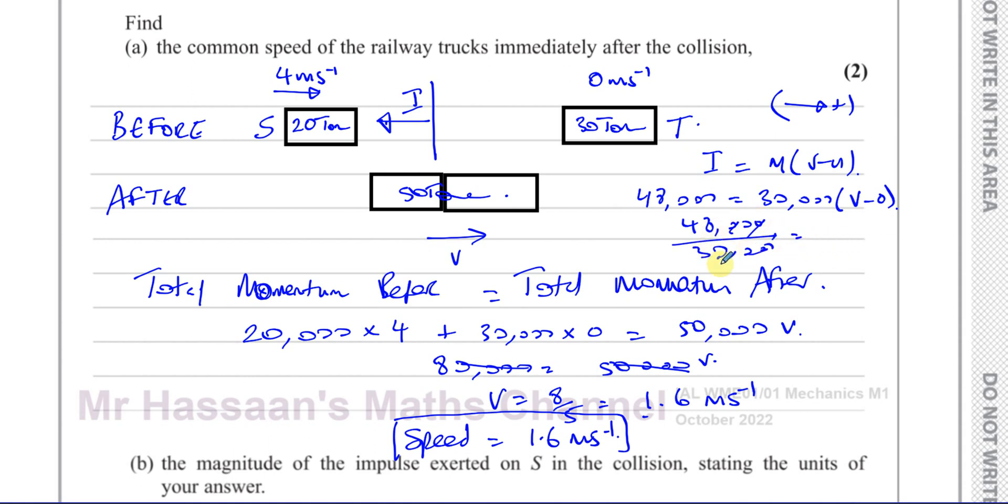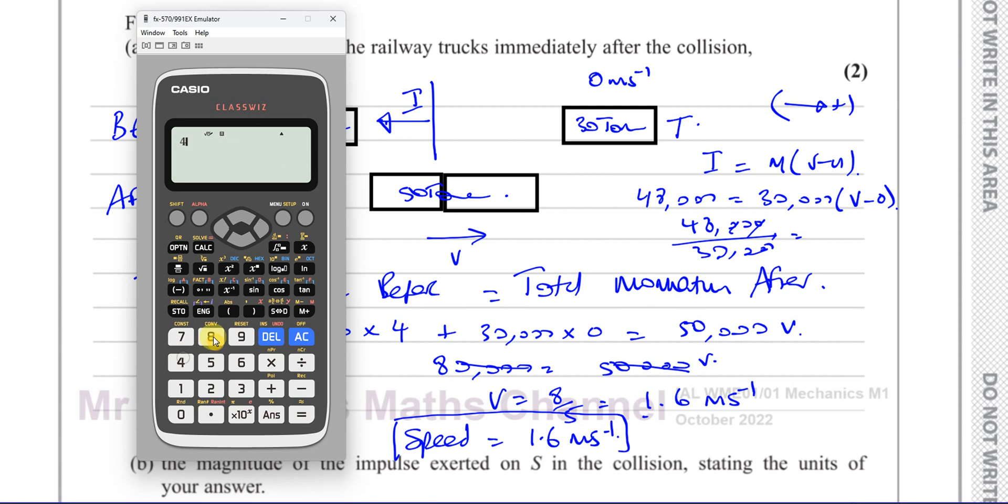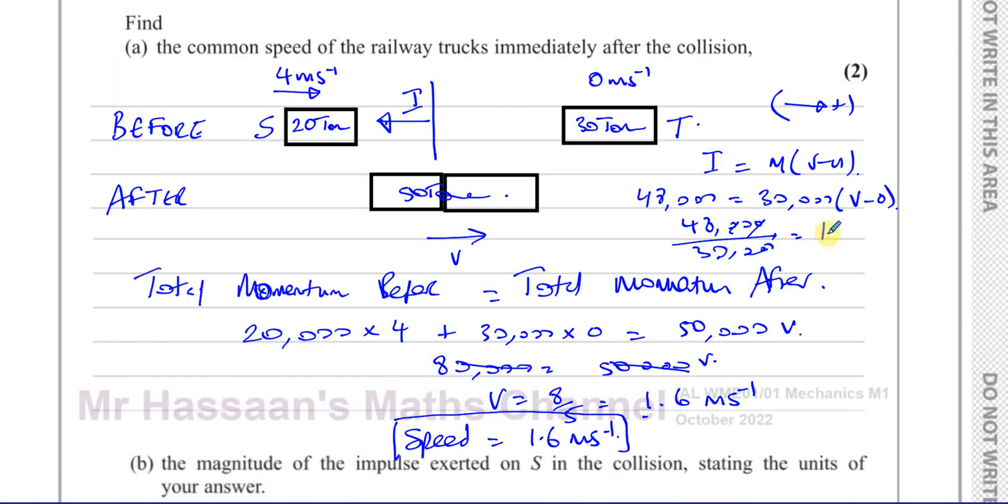If you do 48 divided by 30, you get exactly the same answer, 1.6. So we could actually find the answer for the final speed of the whole, the two things after the collision basically by considering the speed of, considering the change in momentum of T.